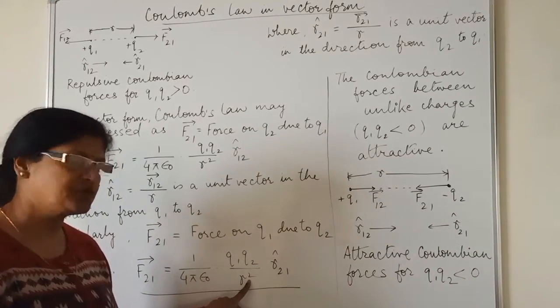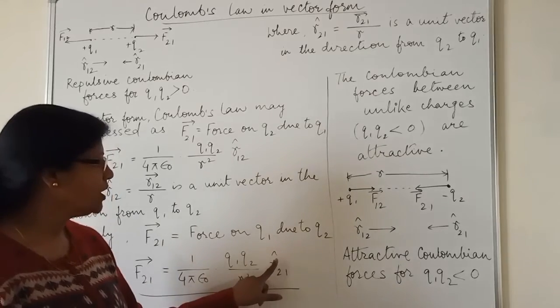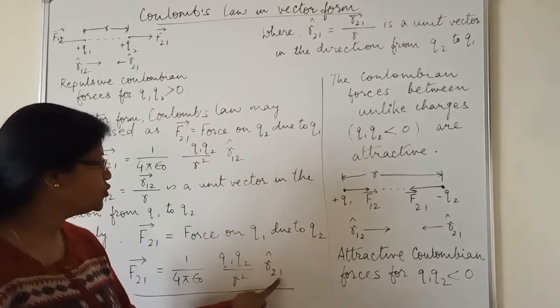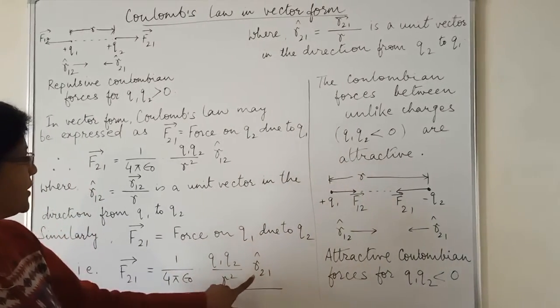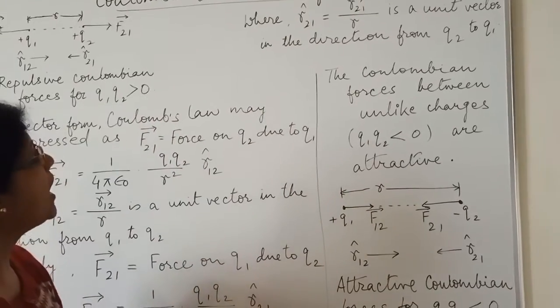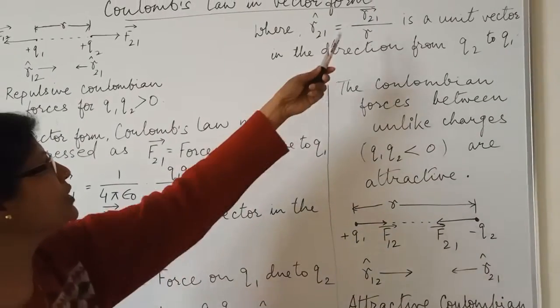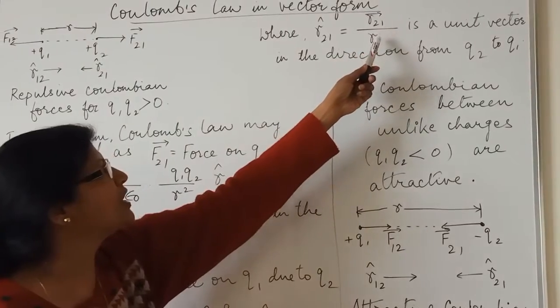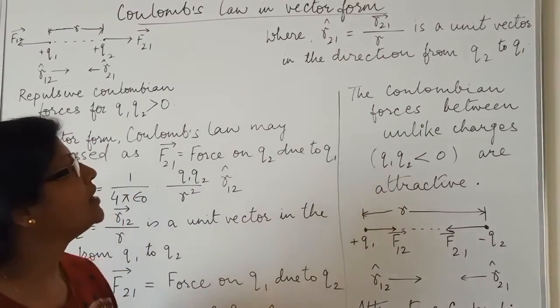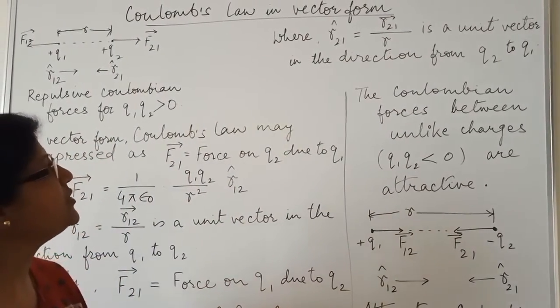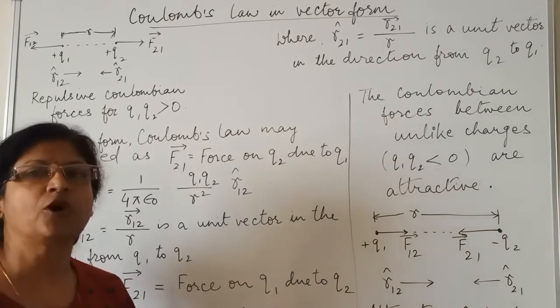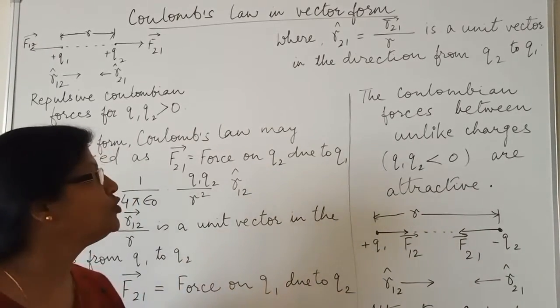Here you see where R21 is equal to R21 upon R, it is a unit vector in the direction from Q2 to Q1.